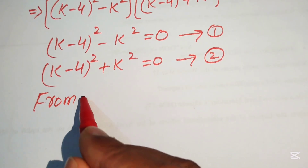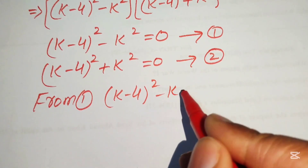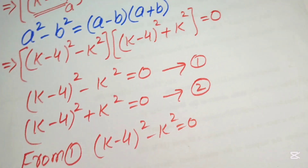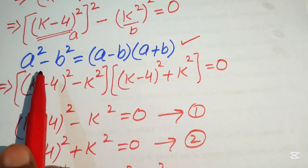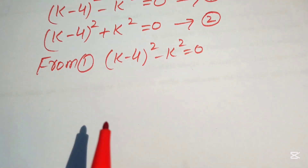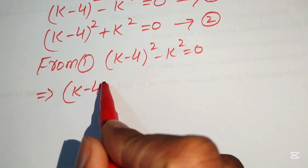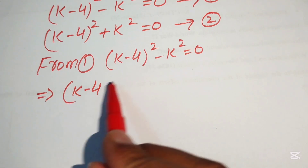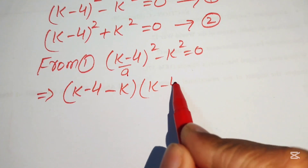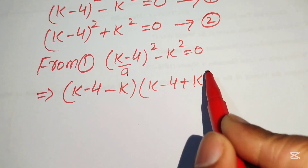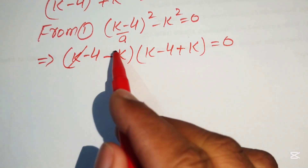From Case 1 we have (k − 4)² − k² = 0. We apply the difference of squares formula again: a is (k − 4) and b is k, giving [(k − 4) − k] × [(k − 4) + k] = 0.